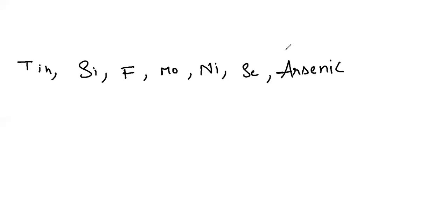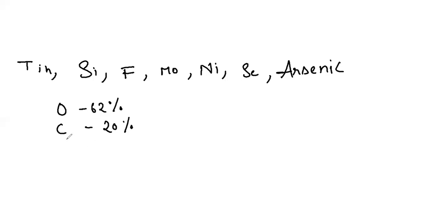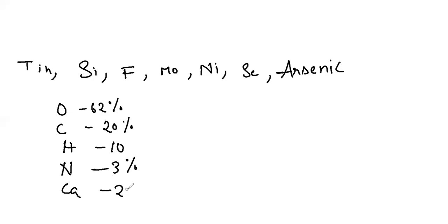Let's see the percentage of elements in the human body. The maximum amount is oxygen at 62 percent. Second is carbon at 20 percent, hydrogen at 10 percent, nitrogen at 3 percent. The remaining are trace elements at less than 2 percent, and calcium is 2.5 percent.